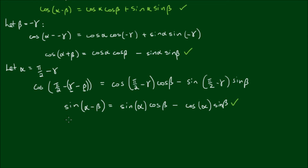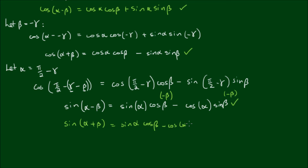To get the third sum-difference formula, we change negative beta to positive beta. So we have sine of alpha plus beta. Cosine of negative beta is still cosine beta, and sine of negative beta is negative sine beta, giving a double negative which becomes positive. So: sine of alpha plus beta equals sine alpha times cosine beta plus cosine alpha times sine beta. This is the third sum-difference formula.